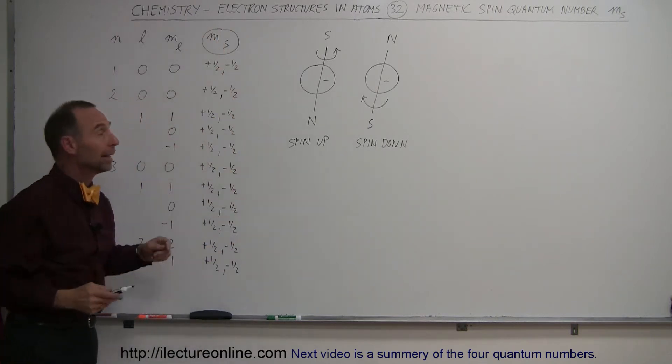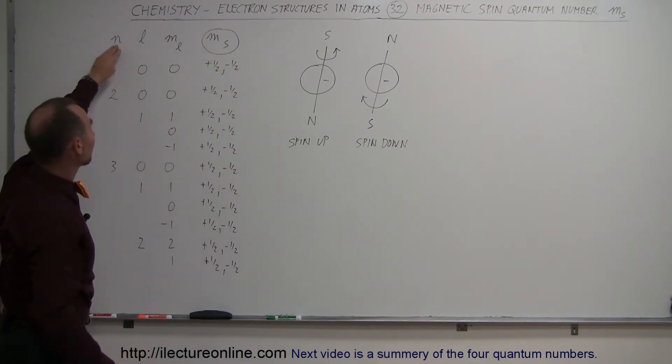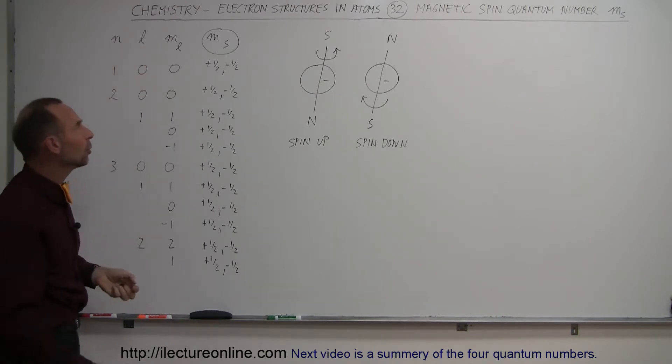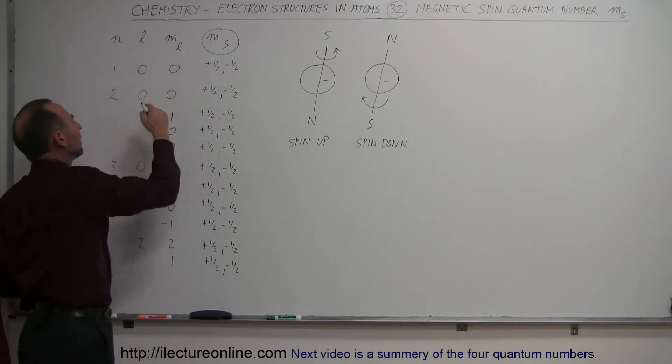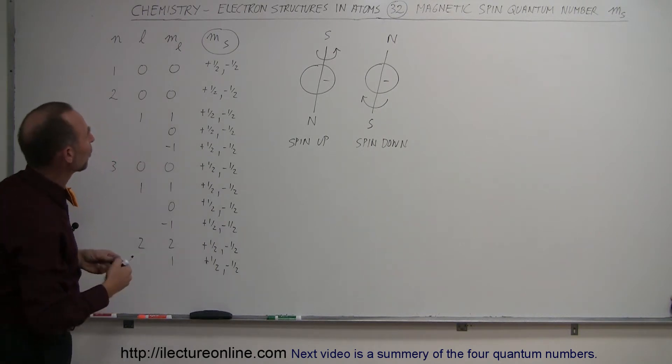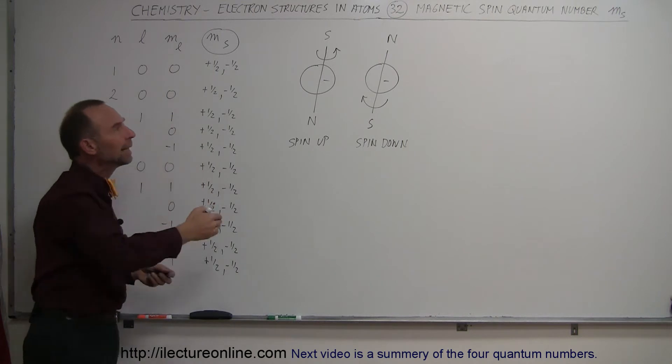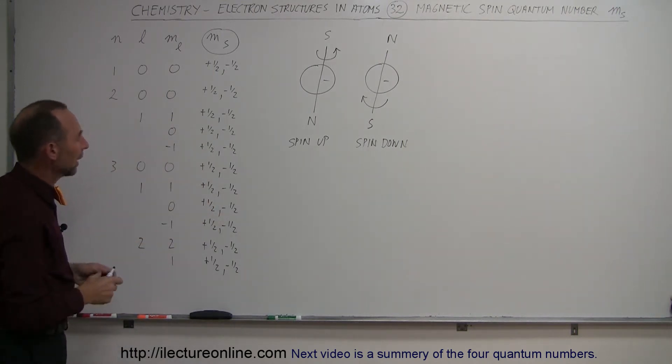N, of course, stands for the energy levels—that's the principal quantum number. L is the angular momentum quantum number. M sub L is what we call the magnetic quantum number, and M sub S is the spin quantum number, the orbital spin quantum number.